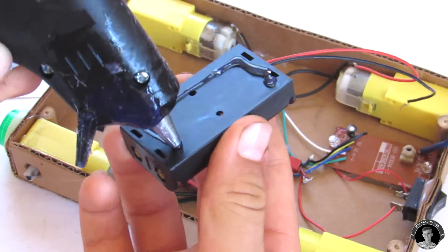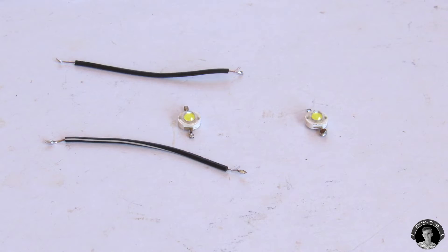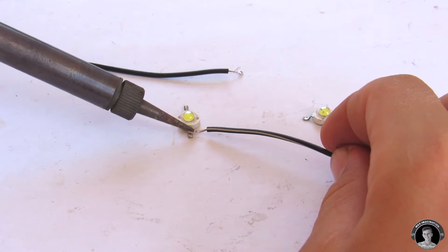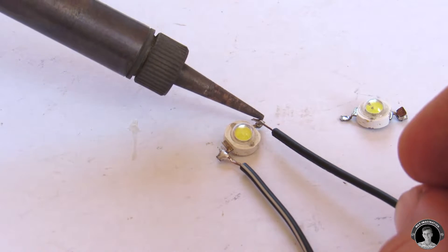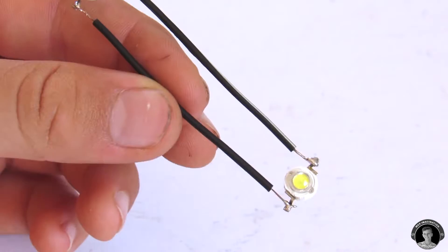With this other battery, which is 3 volts, we'll be connecting the LEDs up to it. I'll show you how. Connect up the LEDs in parallel, which is positive to positive and negative to negative.